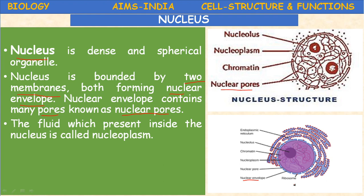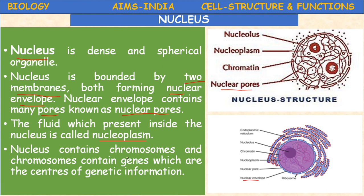The fluid present inside the nucleus is called nucleoplasm. The nucleus contains chromosomes, and the chromosomes contain genes — very important. This is the chromatin material: thread-like structures present inside the nucleus. This chromatin material contains chromosomes, on which genes are located. These genes are called the centers of genetic information.